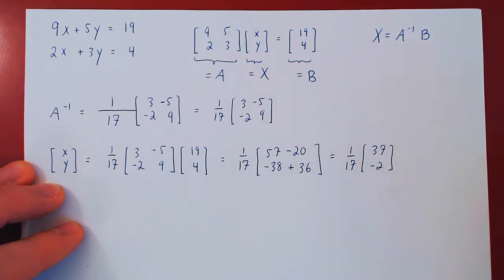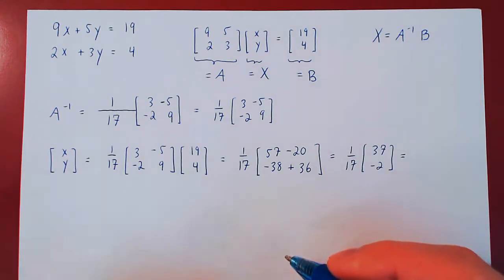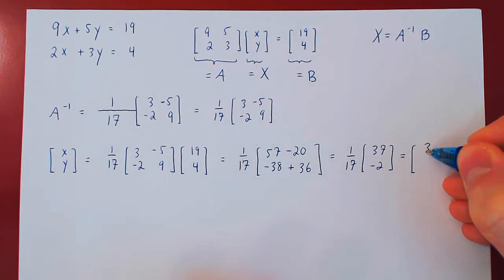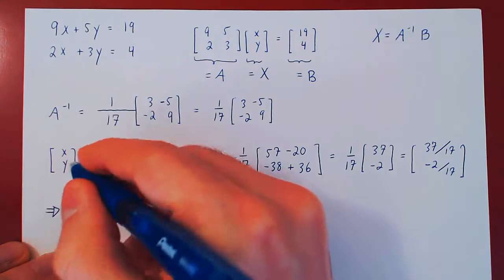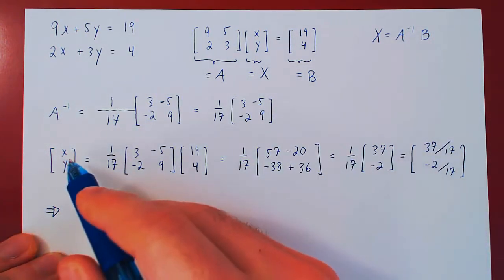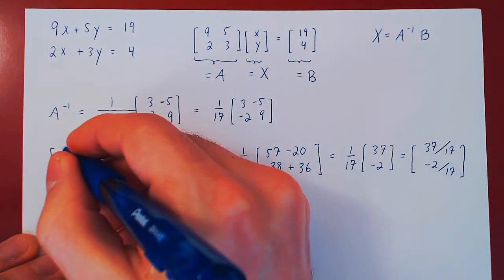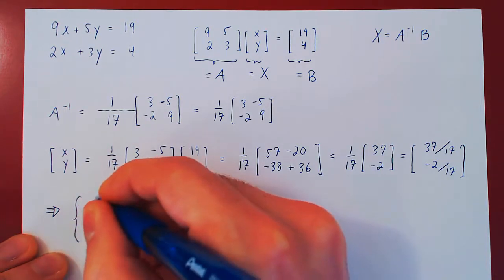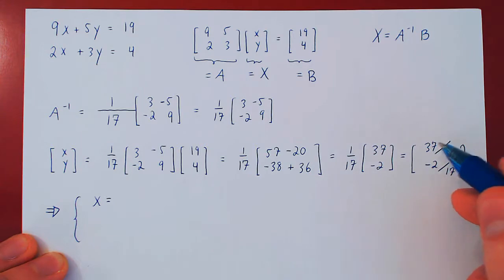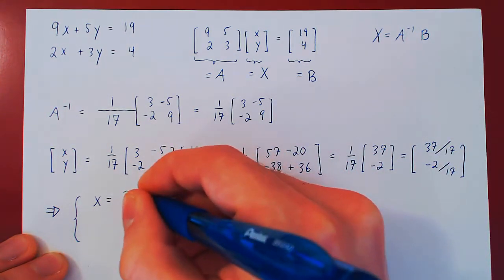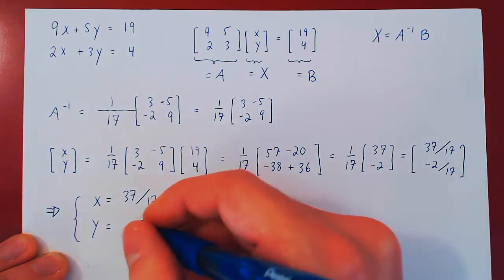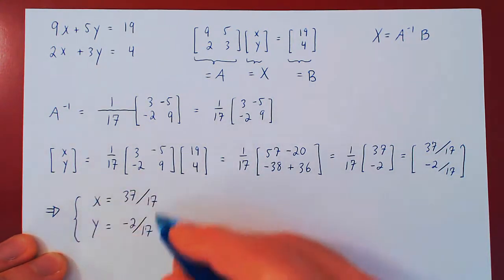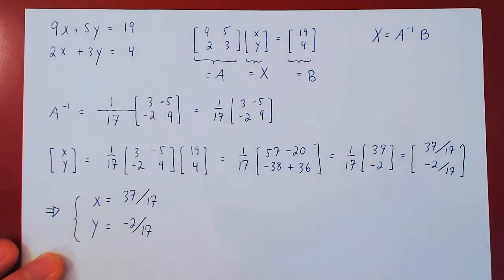Which gives us 1 over 17 times 37, negative 2. And now you can multiply each entry by 1 over 17. So 37 over 17, first entry. Second entry, negative 2 over 17. And here's our conclusion. This column matrix equals this column matrix. But matrices are equal if they have the same corresponding entries. So the first entry of our left matrix is x, must equal the first entry of the right-hand matrix, which is 37 over 17. And the second entry, which is y, must equal the second entry here, which is negative 2 over 17.